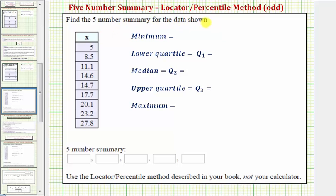We want to determine the five-number summary for the data shown below. The five-number summary consists of these five values: the minimum, the lower quartile or Q1, the median or Q2, the upper quartile or Q3, and the maximum.